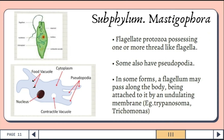Mastigophora is a subphylum of the Kingdom Protista. They are single-celled eukaryotes, which are protozoans, and they may form colonies or exist as single cells and can be free-living organisms or parasites. They can be found in terrestrial and aquatic environments. Furthermore, there are two classes of Mastigophora: Phytomastigophora and Zomastigophora.